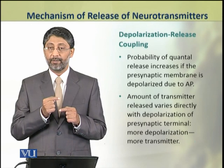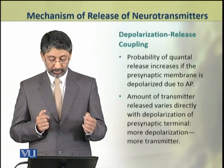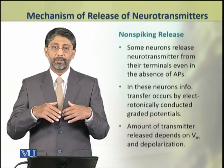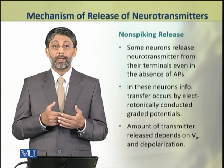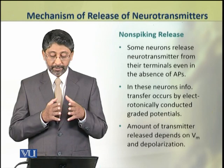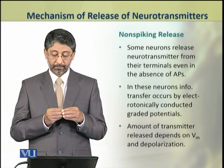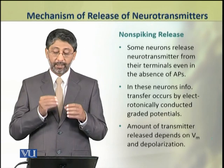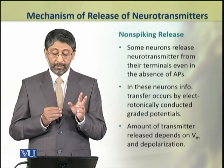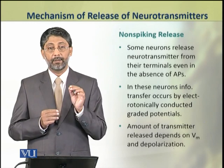If the depolarization is weak, neurotransmitter release will correspondingly be less. There are some neurons that do not generate action potentials, yet there is still release of neurotransmitters from their axon terminals — this is called non-spiking release. In these neurons, information transfer occurs by electrotonically conducted graded potentials. In this case too, the amount of transmitter released depends on the membrane potential and depolarization.